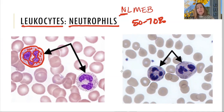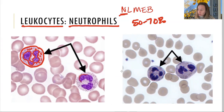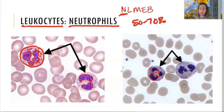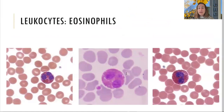The biggest giveaway for identifying neutrophils is their multi-lobed nucleus — if you see a cell with a multi-lobed nucleus, it is most likely a neutrophil. The multi-lobed nucleus looks like a necklace with beads on a string. To summarize: neutrophils are 50–70% of white blood cells, their job is phagocytic, and their identifier is that multi-lobed nucleus.